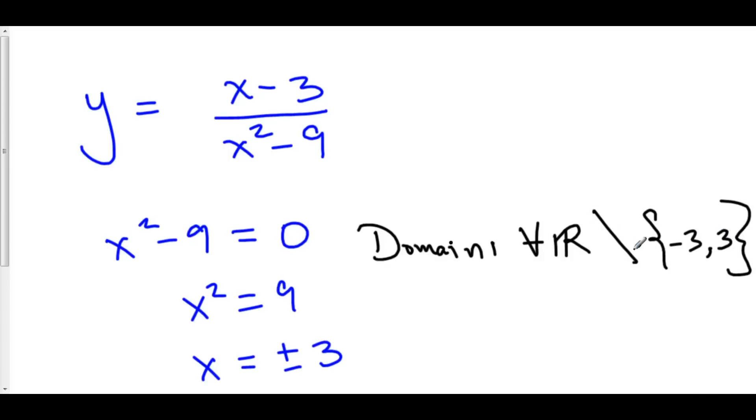This means not. So, all reals not including negative 3 and 3. Now, there's a bit more to this one, actually. If we were to factor x squared minus 9, we have x minus 3 over x minus 3 times x plus 3.